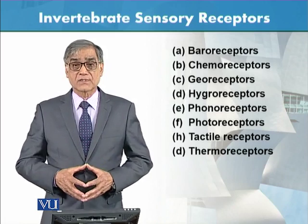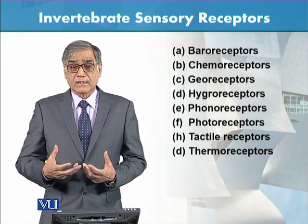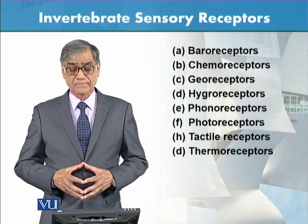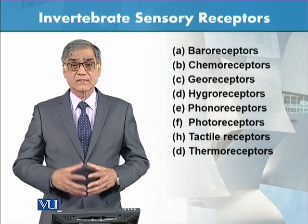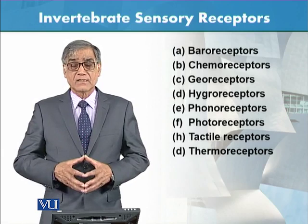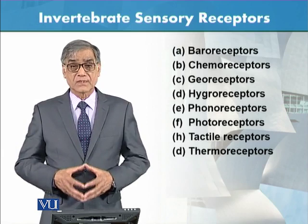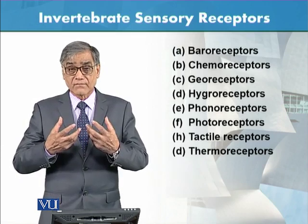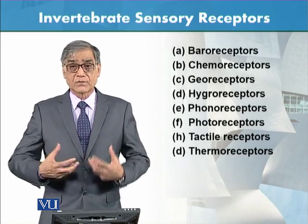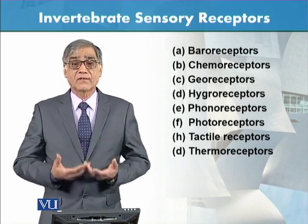Then there are georeceptors — that is, the gravitational pull. In humans or vertebrates, as such there is no distinct receptor called a georeceptor, لیکن invertebrates کے اندر ہیں — they are very sensitive to georeceptors, that is the gravitational pull of the earth, and against this pull the animal behaves differently.